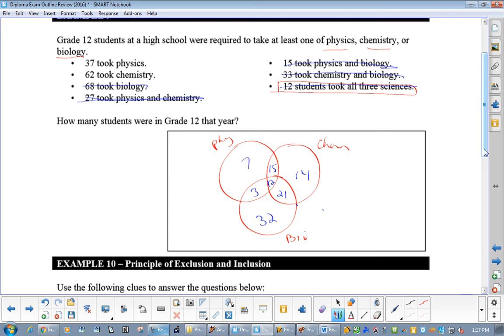Now, really, we've accomplished what we need to do. It says, how many students were in grade 12 that year. Very, very tough question to do without building this. But when you have built it, just add up every single number. So, add all to get 104 students.